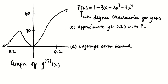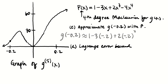So g(−0.2) ≈ 1 − 3(−0.2) + 2(−0.2)³ − 4(−0.2)⁴. With a calculator we could simplify; without one, we leave it just like that.